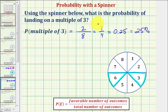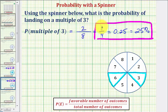So if the probability is one-fourth, this means theoretically we expect to land on a multiple of three twenty-five percent of the time, or twenty-five times out of one hundred. I hope you found this helpful.